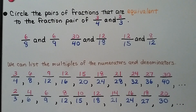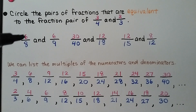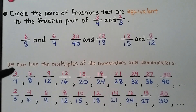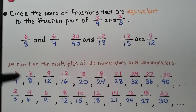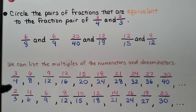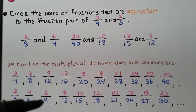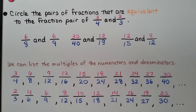We need to circle the pairs of fractions that are equivalent to the fraction pair 3/4 and 2/3. Are 6/8 and 6/9 equivalent to 3/4 and 2/3? We list the multiples of the numerators and denominators. 6/8 is equivalent to 3/4 — that would be 3 times 2 and 4 times 2. Is 6/9 an equivalent fraction for 2/3? That would be 2 times 3 and 3 times 3 — yes, we multiply numerator and denominator by 3 to get 6/9. So 6/8 and 6/9 are equivalent to the fraction pair 3/4 and 2/3.